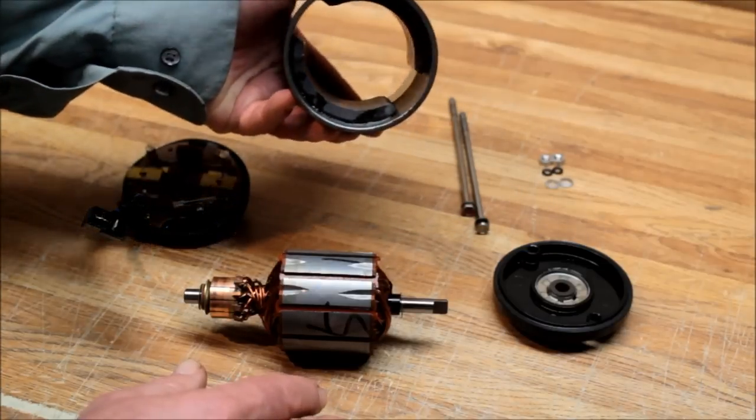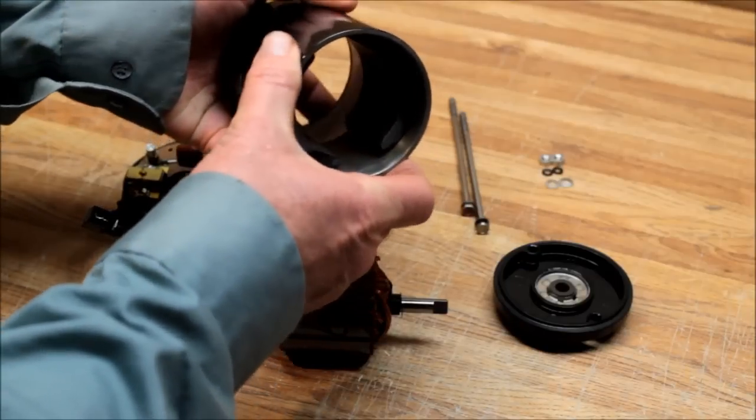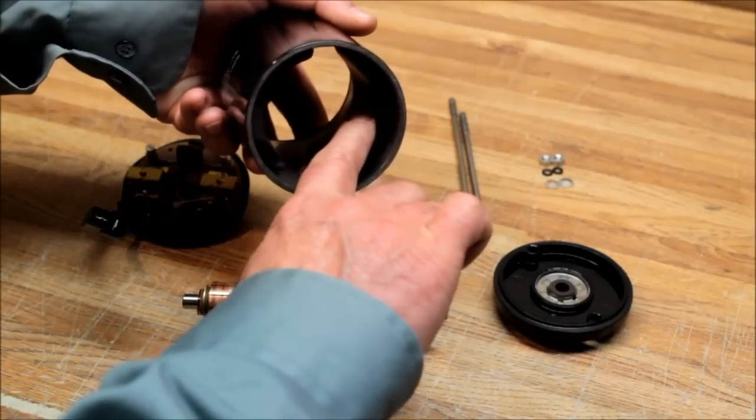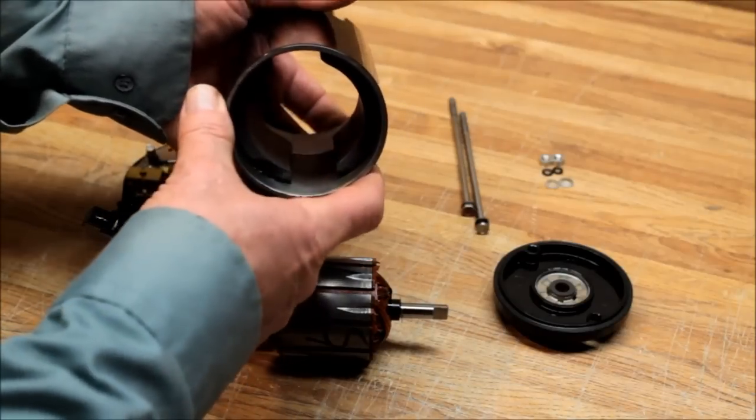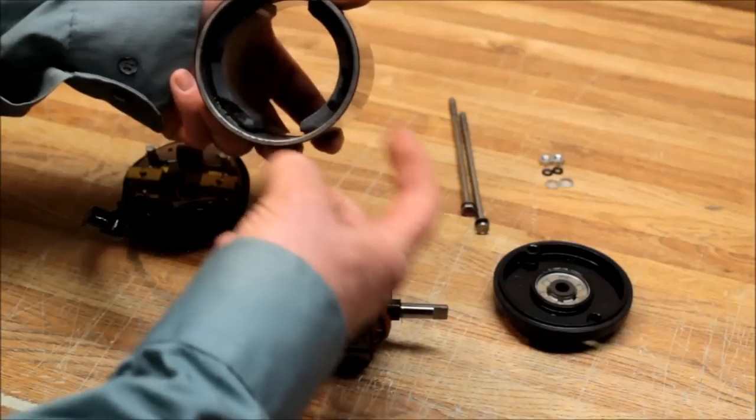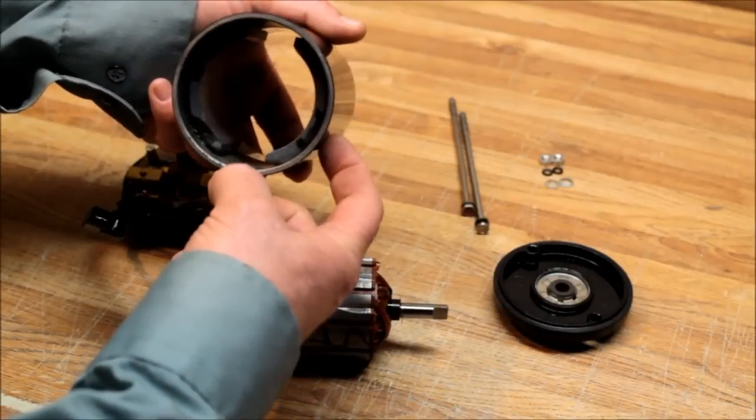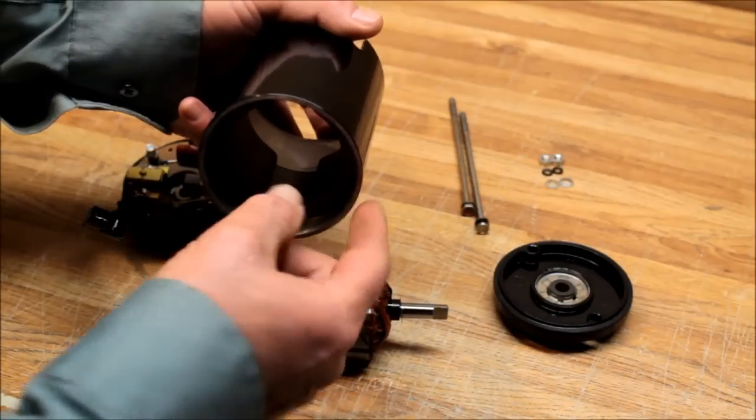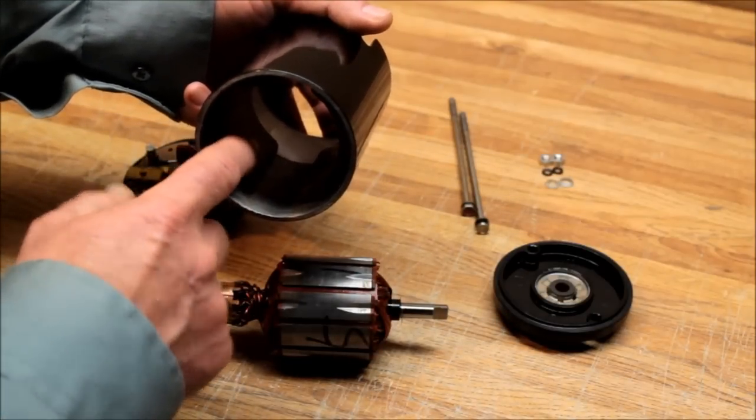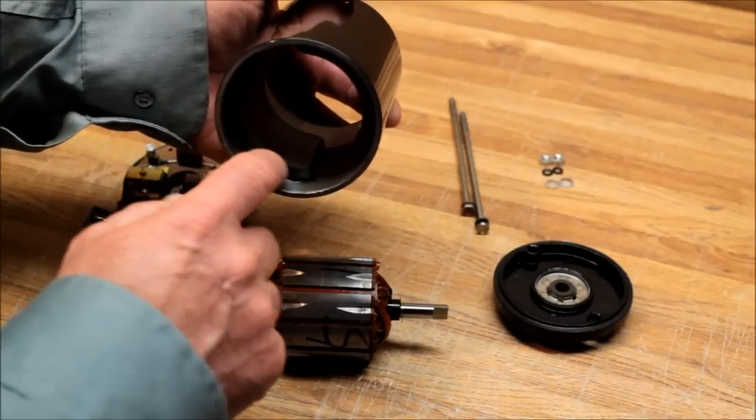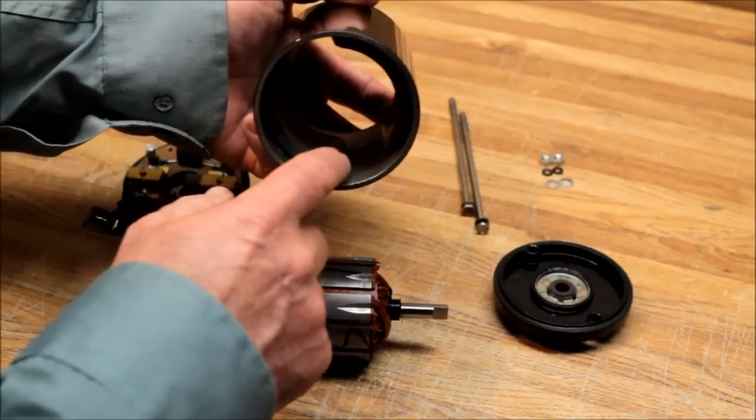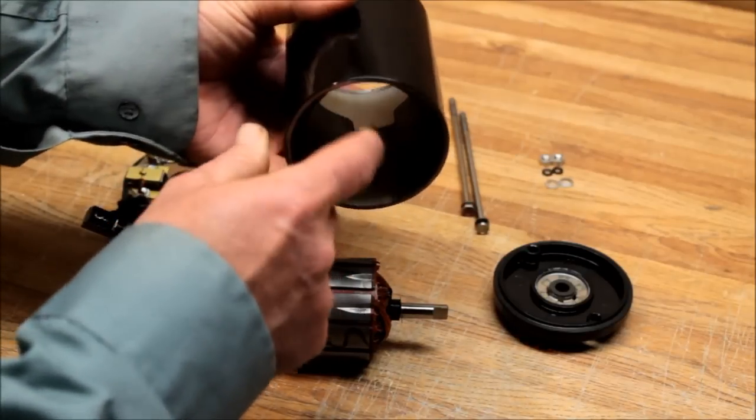First off, you've got your field housing with top quality high-powered ceramic magnets bonded inside the case. This is one of the reasons why they say never pound on the side of the case with a hammer. If you do, you can crack these magnets, break them, or break this bond loose.